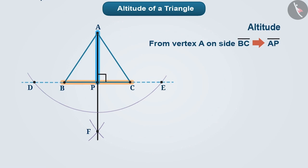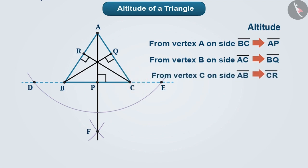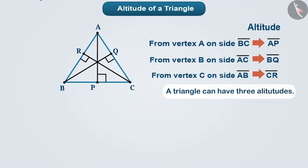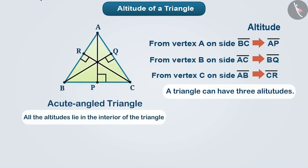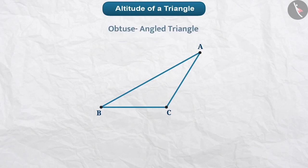Just imagine how many altitudes a triangle can have. A triangle has three altitudes — from vertex A to side BC, from vertex B to side AC, and from vertex C to side AB. Since this is an acute triangle, you can see that all three altitudes are in the interior of the triangle.